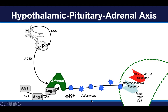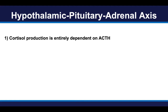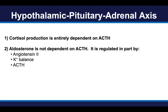As you can see in this cartoon, in contrast to cortisol, aldosterone production is regulated in part by ACTH, but also independently by several other factors — angiotensin 2 and high potassium. To summarize: cortisol production by the adrenal glands is entirely dependent on ACTH. In contrast, aldosterone production is not entirely dependent on ACTH; it is in part regulated by ACTH, but also independently regulated by angiotensin 2 and potassium balance. So there are three independent regulators of aldosterone, but one pure regulator of cortisol.